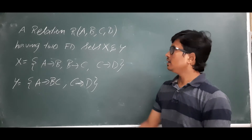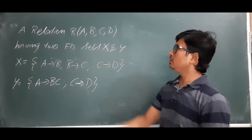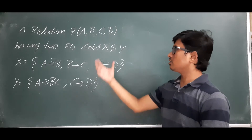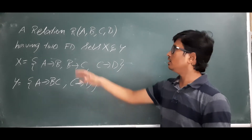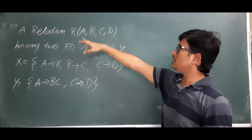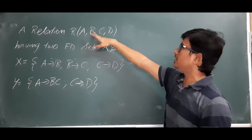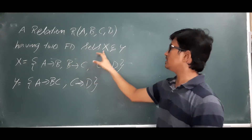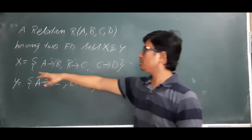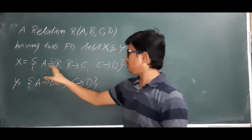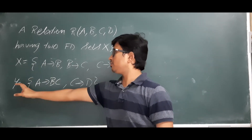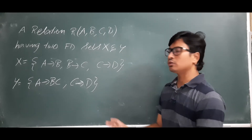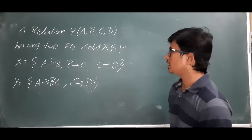Good morning students. In this video we will discuss another example on equivalence of two FD sets or not. A relation R consists of attributes a, b, c, d having two FD sets X and Y. They have given the set of FDs present in X and the set of FDs present in Y, and they are asking whether X is equivalent to Y or not.